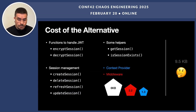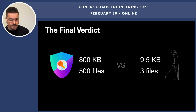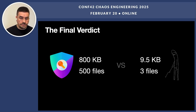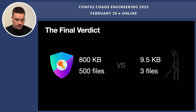We have 9.5 kilobytes of native code — that's our alternative cost. What's the final verdict? 800 kilobytes and 500 files versus 9.5 kilobytes and only 3 files. You tell me, guys — who wins? That's a rhetorical question for me.